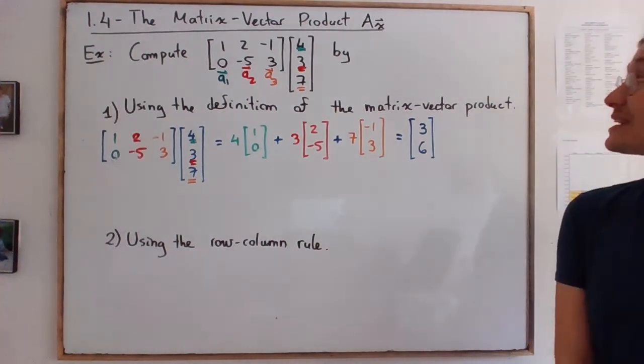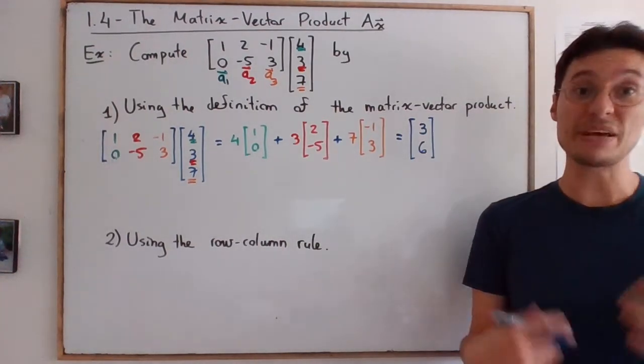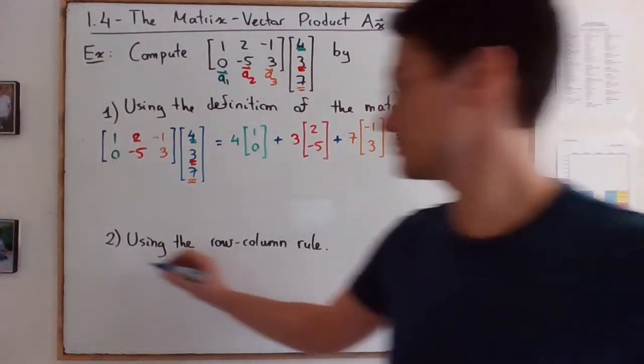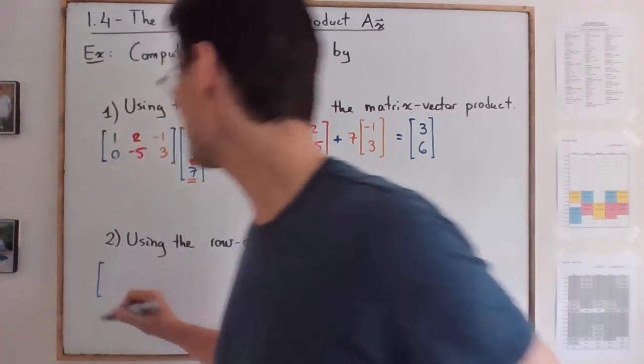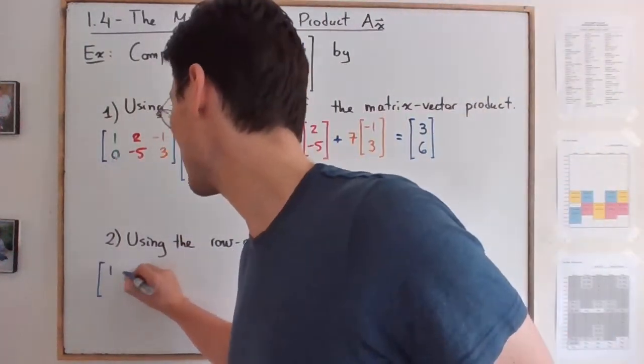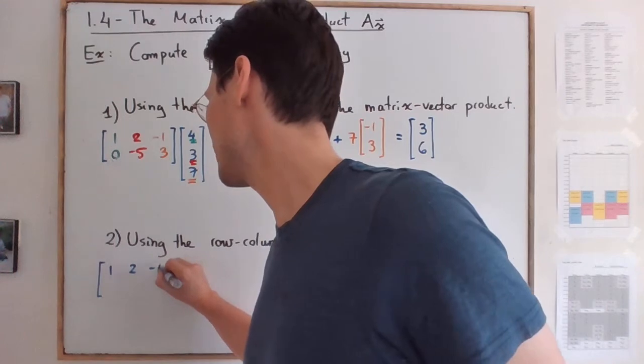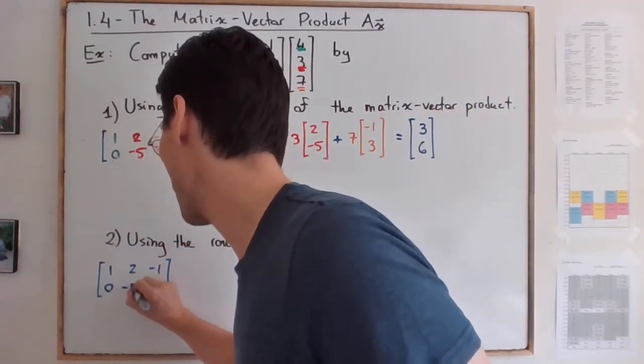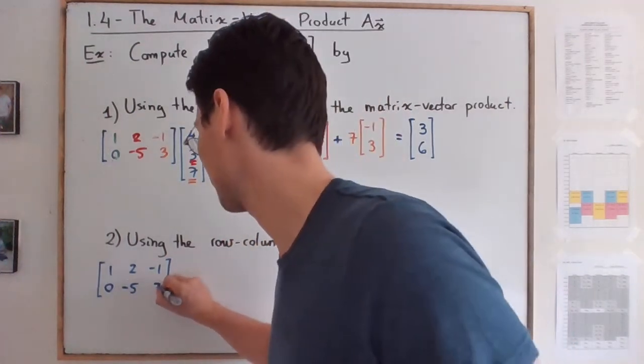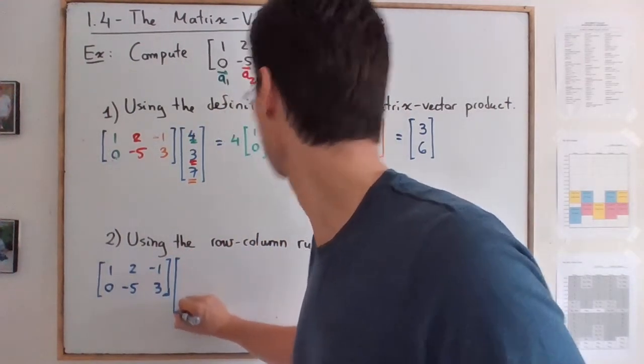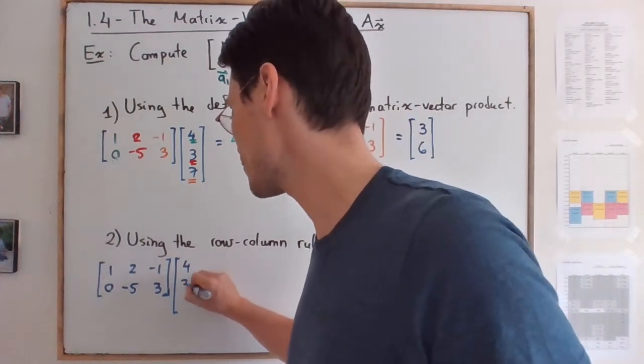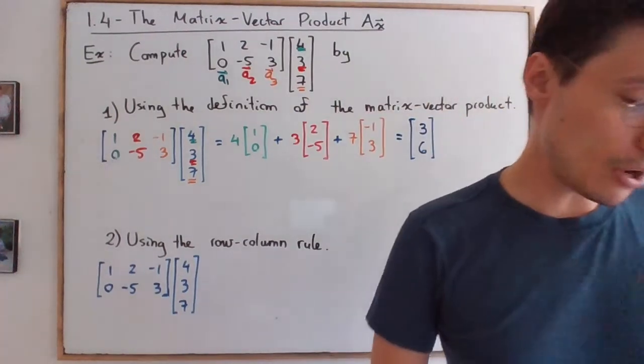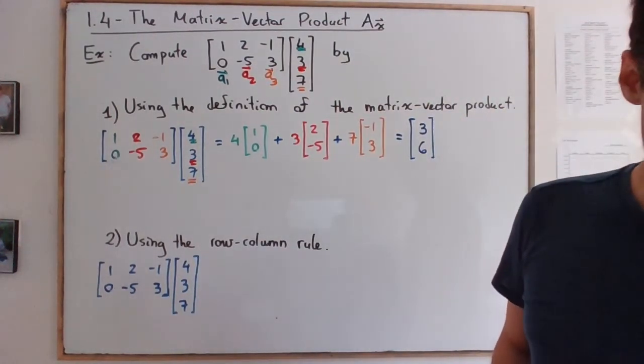So this is the result using the definition of the matrix vector product. Now using the row column rule. Let's write the same matrix. And now I won't color code it because if I do, it's going to be a little bit confusing. What I will color code, I think, are going to be the operations. So 4, 3, 7.